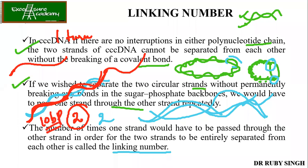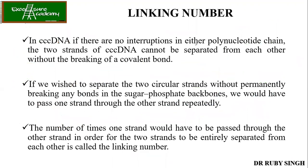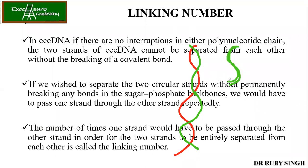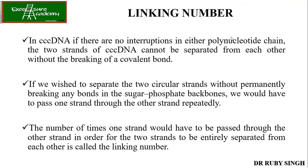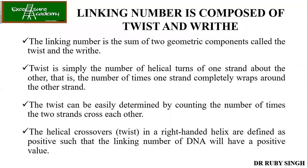At least ten base pairs you need to consider for one turn to be completed. Each complete turn — around 10.5 base pairs — counts as one unit of linking number. The linking number is composed of twist and writhe: LK = Twist + Writhe. These are two important terminologies to remember.